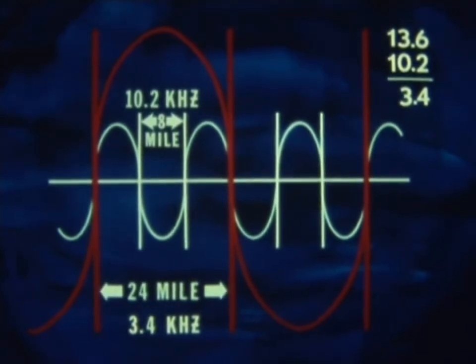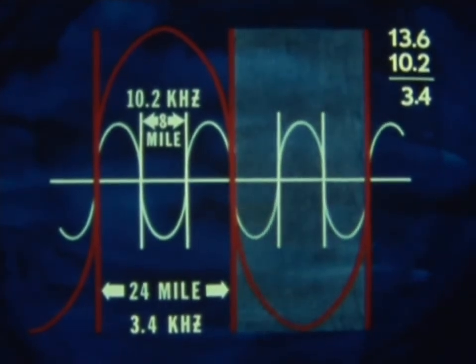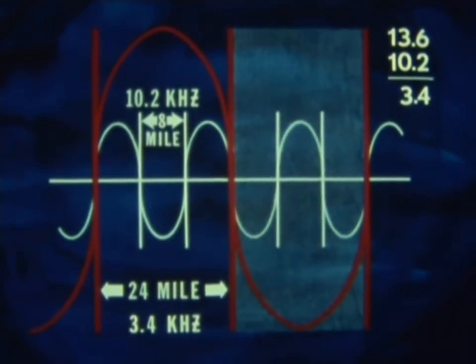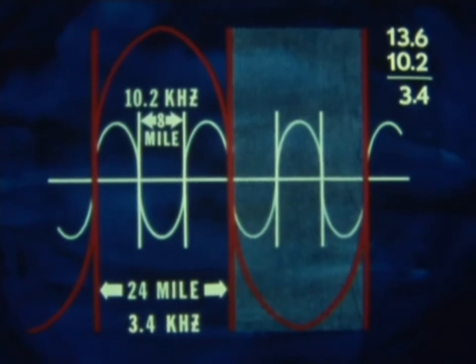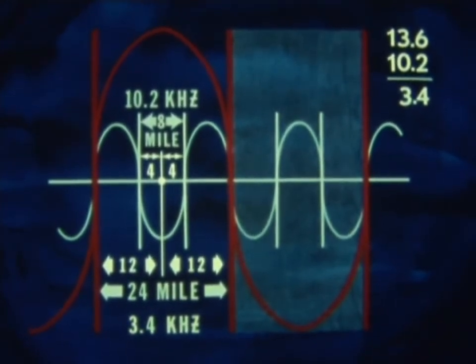This new lane helps resolve lane ambiguity because now we have a lane three times as large in which to place ourselves. And instead of being required to know our position within plus or minus four nautical miles, we now have a radius of 12 miles in which to establish lane count. Here's the way it works.